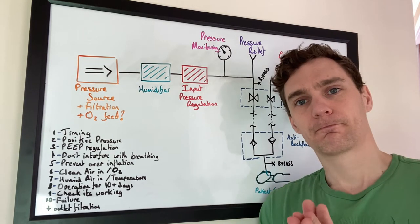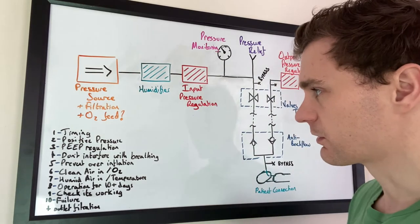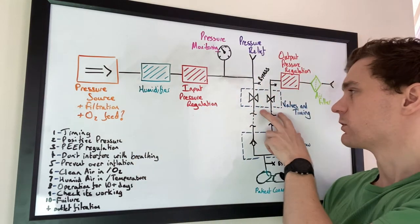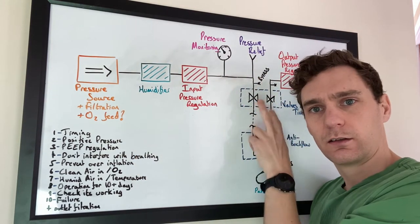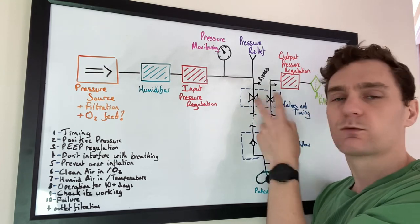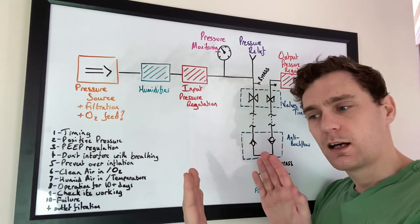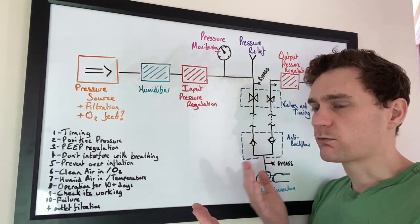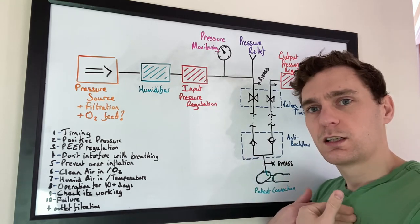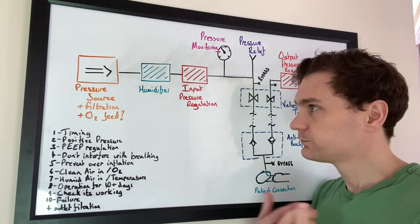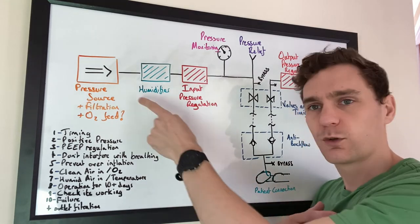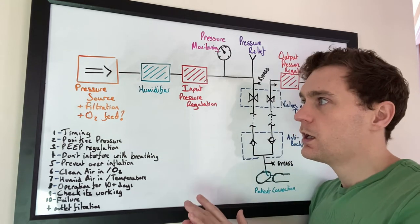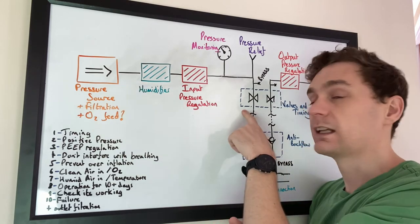So let's go down the list of ten things and see how many of those we've covered. First, timing. Okay, yep, we've got these valves here. They do the timing of the breath. If you change the rate at which they switch and how long each one is open, then you can change the breathing rate and you can change the ratio of inspiratory to expiratory phases, breathing in to breathing out. If your pressure source is cyclic, if your pressure source is like bellows, that pressure source has to be linked to these valves.